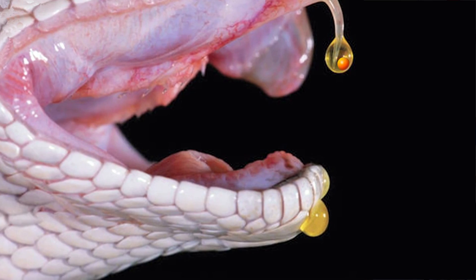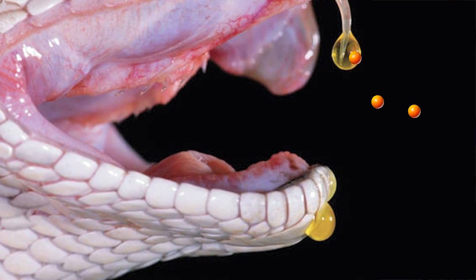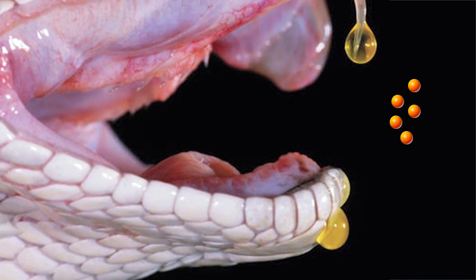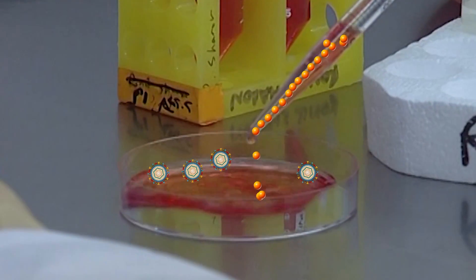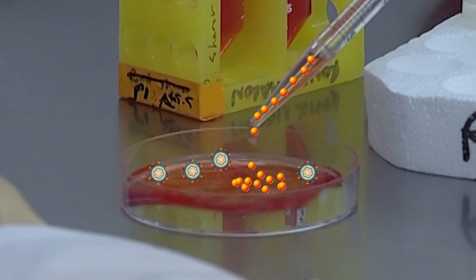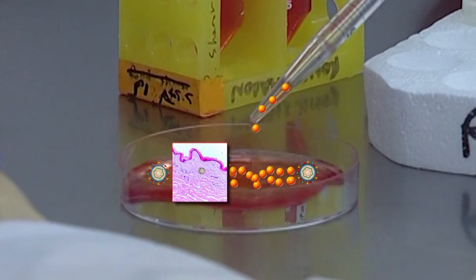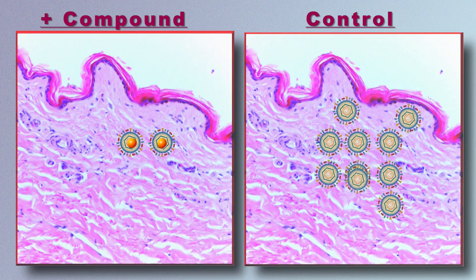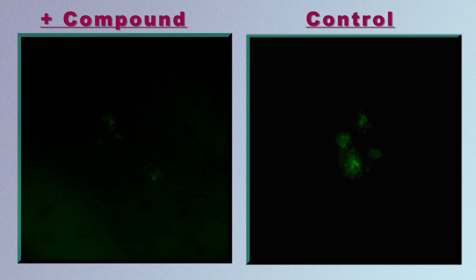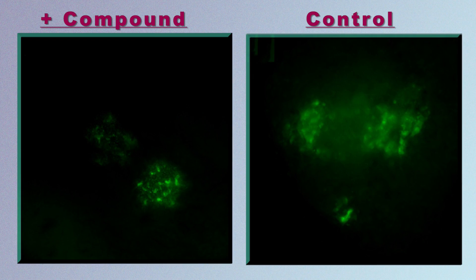We have one potential drug that we are now investigating. This drug was isolated from snake venom, and we put it on tissue infected with the herpes virus to see how the compounds block virus replication. We are getting encouraging results with this drug.